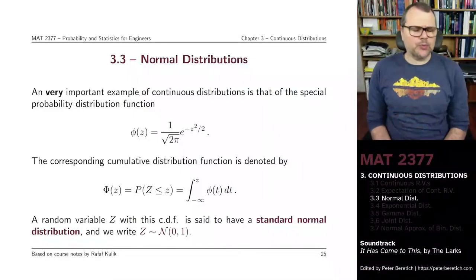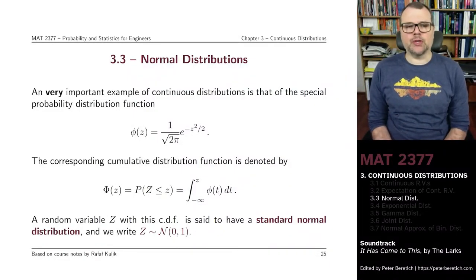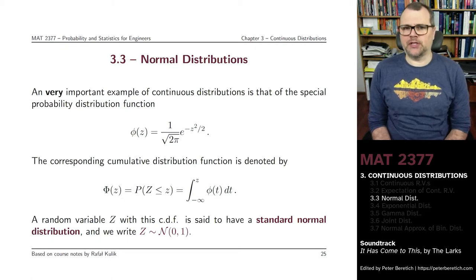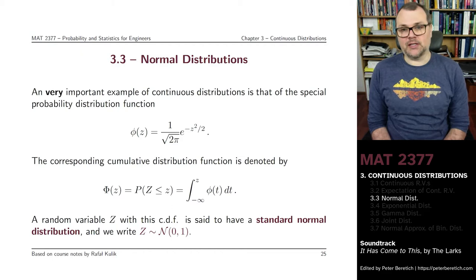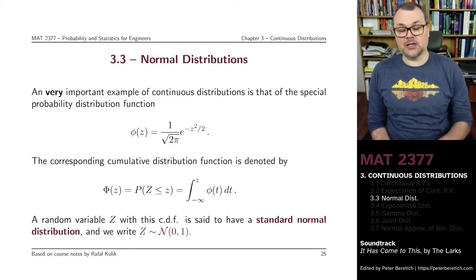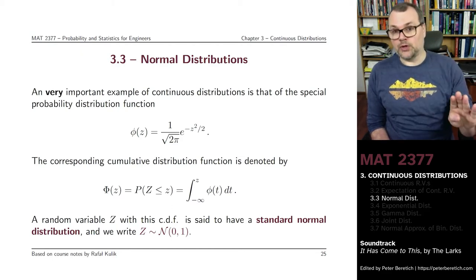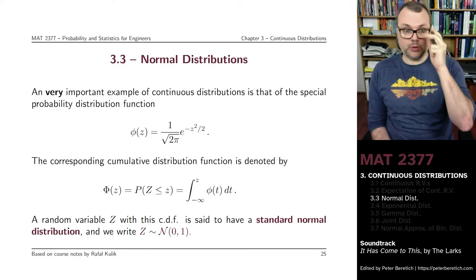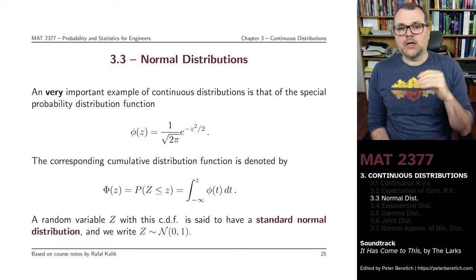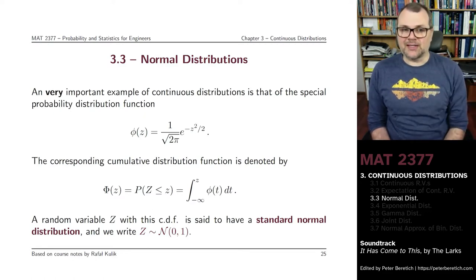This next distribution, the normal distribution, is a very important example of a continuous distribution. If you're going to be doing any probability and statistics later on, there's a very good chance that what you're going to be using is the normal distribution. It is a random variable that has a specific PDF.